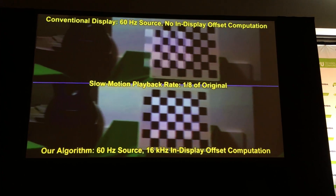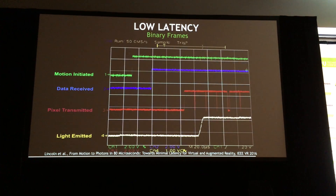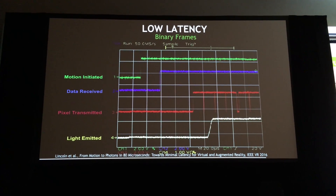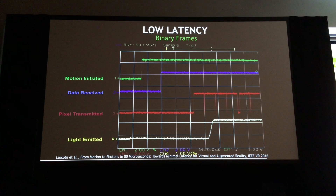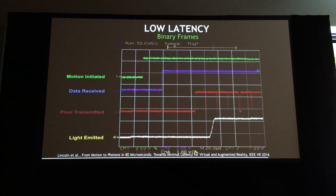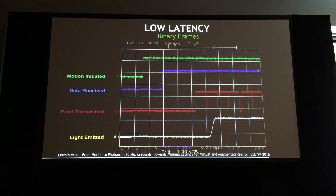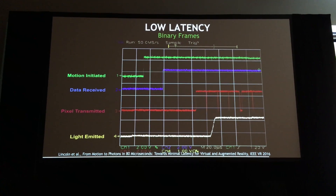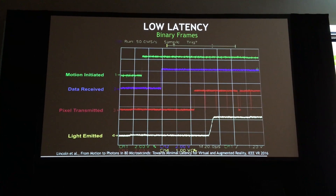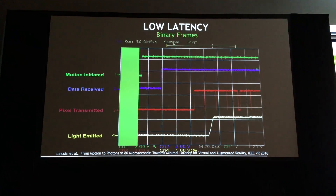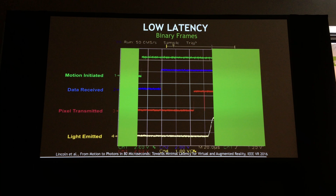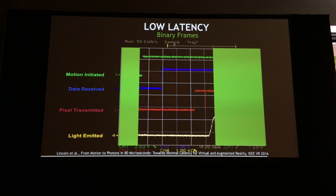To really drive that home, here's an oscilloscope readout. When the top green line jumps, that's when the head starts to move. And when the bottom yellow line jumps, that's when we've updated the image. That's the delay we're trying to get down — for a modern VR system, that's about 20 milliseconds with time warp.